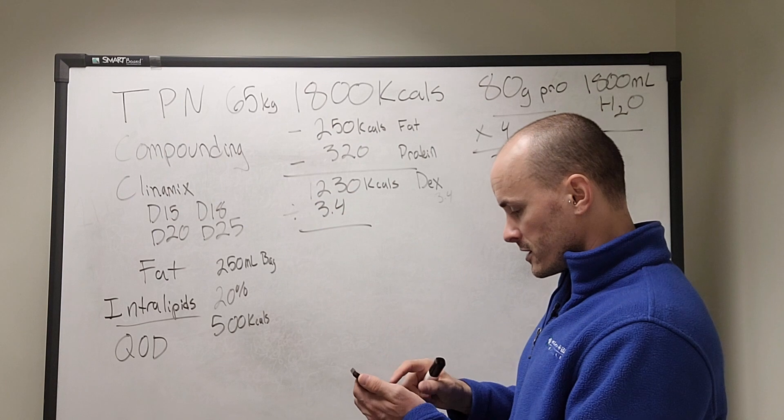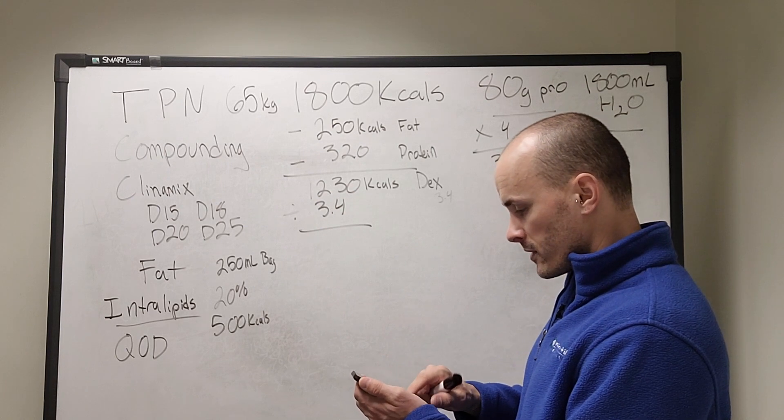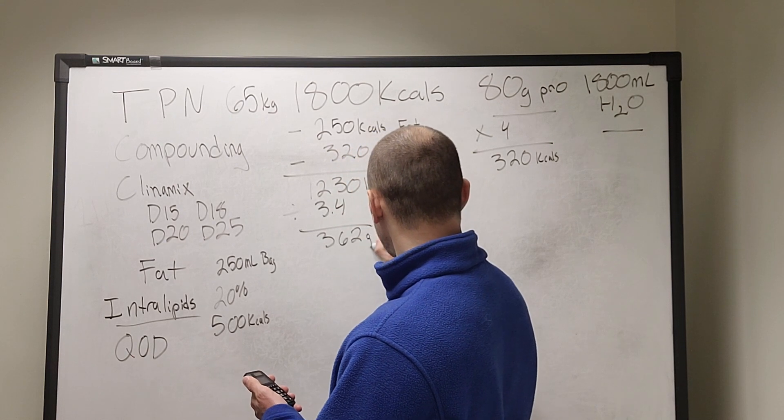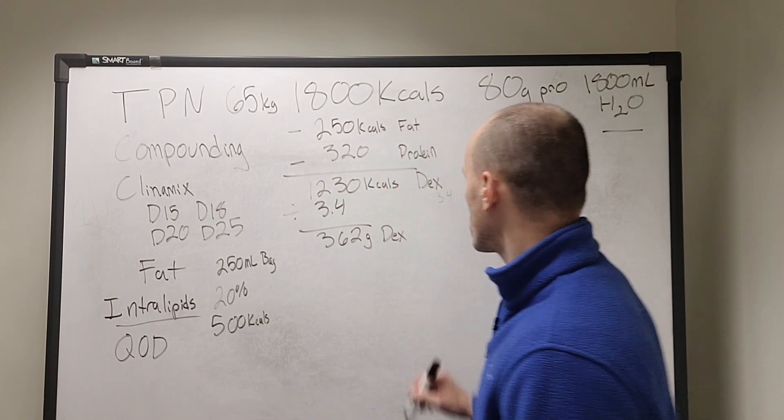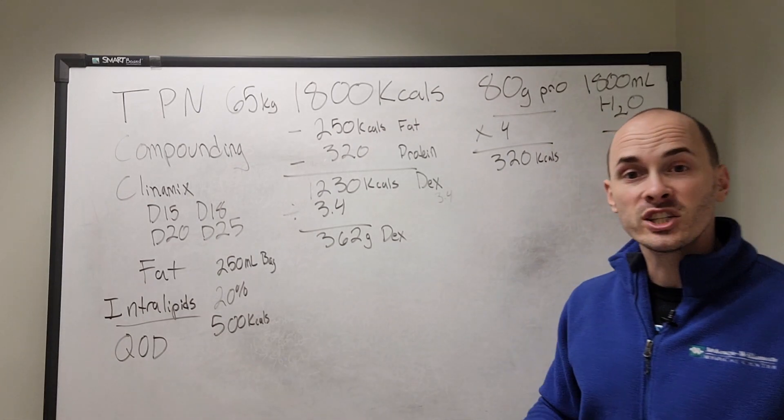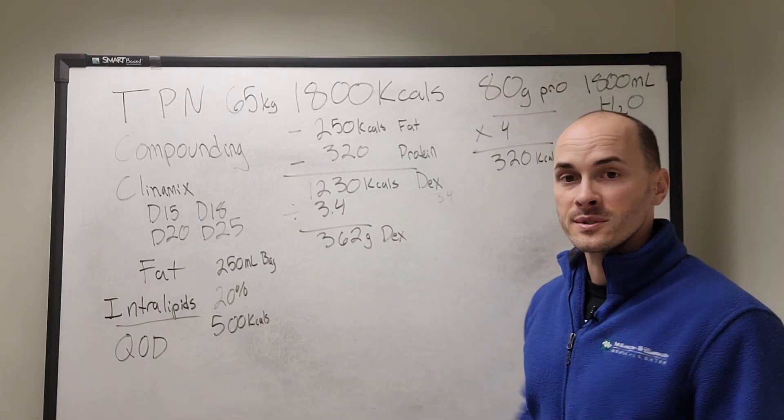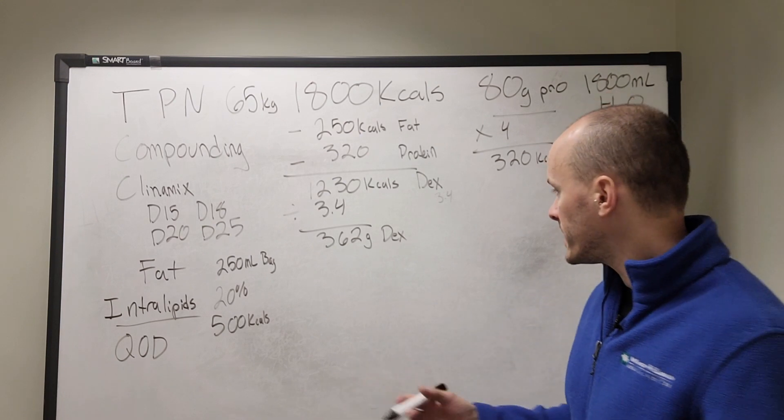So 1230 divided by the calories from dextrose gives us 362 grams of dextrose. That's what this patient needs. It is 362 grams of dextrose to meet the remaining caloric needs.